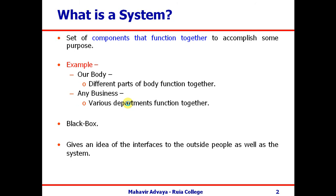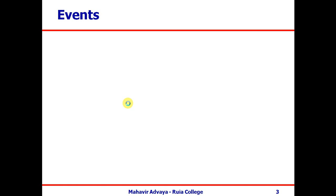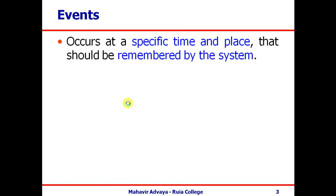This system is affected by various events that take place in it. Events are triggered by users. An event is something that occurs at some specific time and place, and these events need to be remembered by the system. Different stakeholders deal with the system, provide information, and get outputs. Examples of such systems include the railway reservation system, airline reservation system, and banking system.